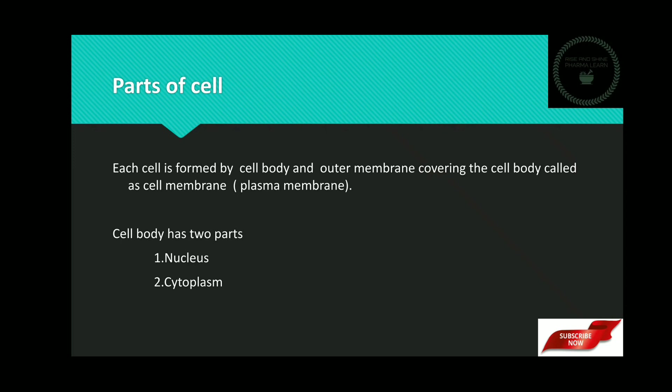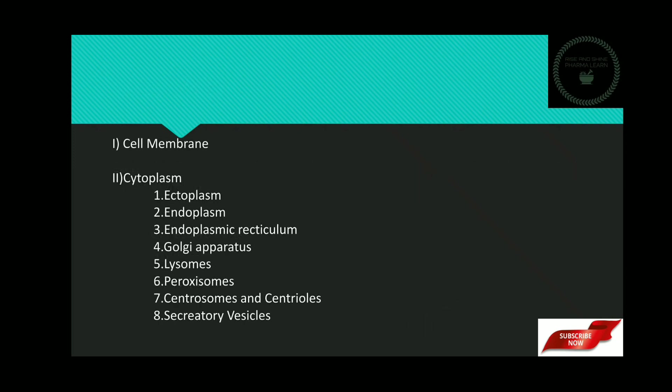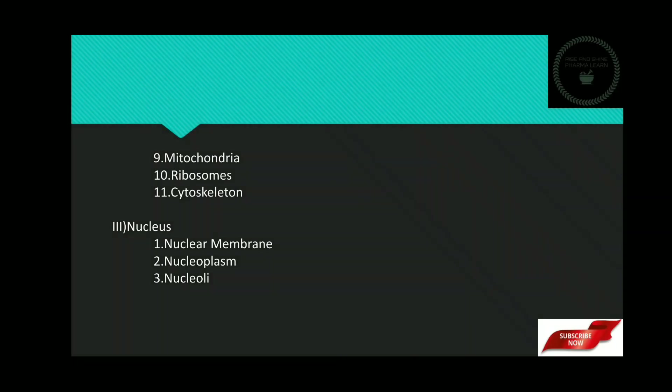The cytoplasm has the following parts: ectoplasm, endoplasm, endoplasmic reticulum, Golgi apparatus, lysosomes, peroxisomes, centrosomes and centrioles, secretory vesicles, mitochondria, ribosomes, and cytoskeleton.